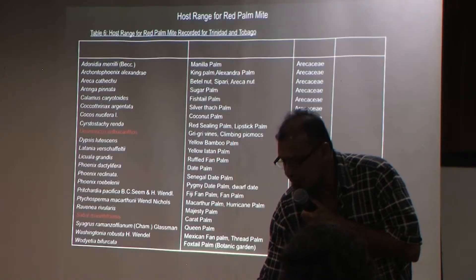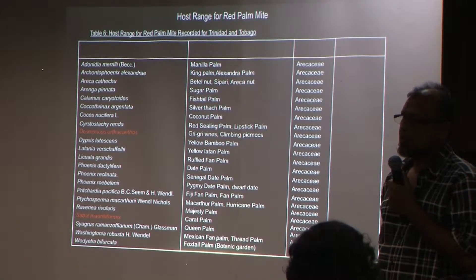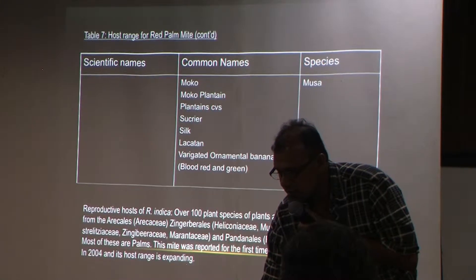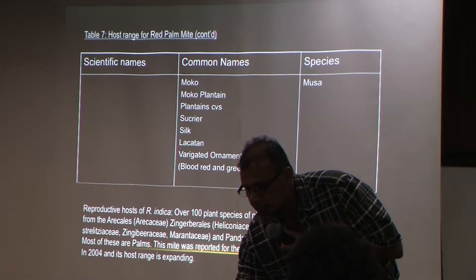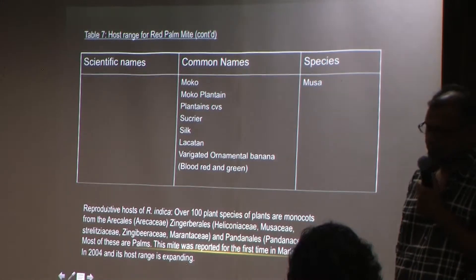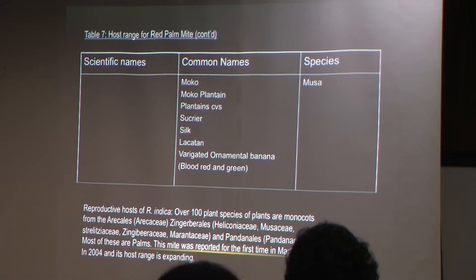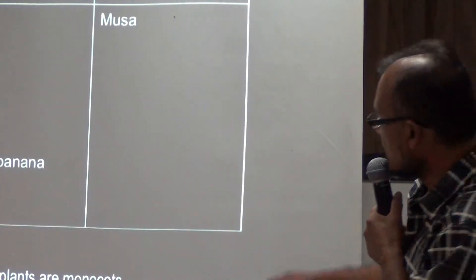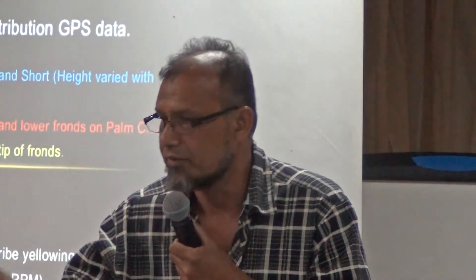Let us go straight now into the red palm mite. In terms of the host range, there are over 100 plant species documented as hosts of the red palm mite. Here in Trinidad, I have established almost about 50 palm species as hosts. It includes a range of other plants — I'll highlight the list but won't go through all of them; it's just for your information.